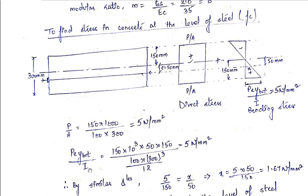Now computing P·e·Y_bottom / I: P = 150 × 10³ N, eccentricity e = 50 mm, Y_bottom = 150 mm (distance from neutral axis to bottom fiber), and I = BD³/12 = 100 × 300³ / 12. This gives a bending stress of 5 N/mm² at the bottom fiber. Using similar triangles with the eccentricity of 50 mm and Y_bottom of 150 mm, the bending stress x at the level of steel is calculated.